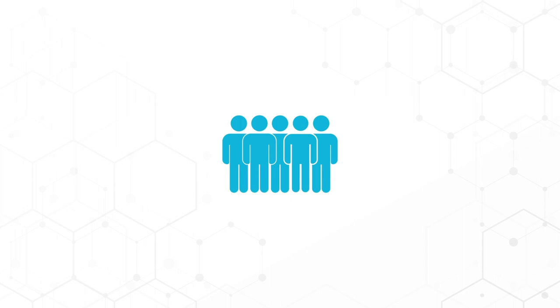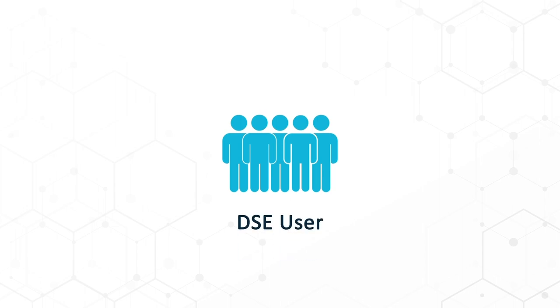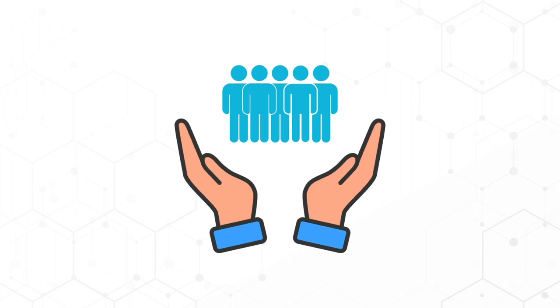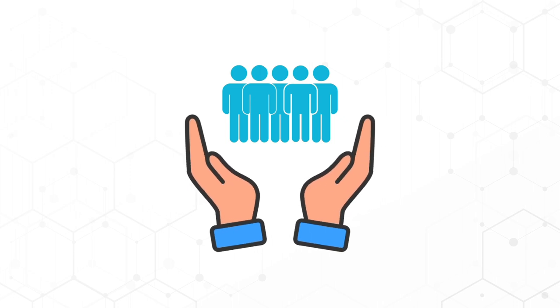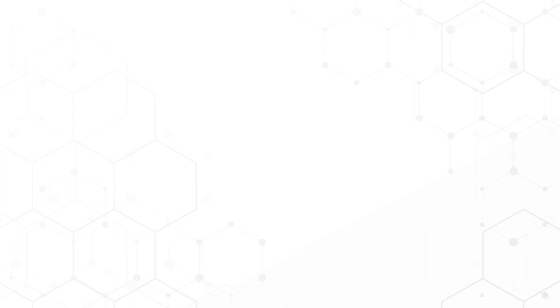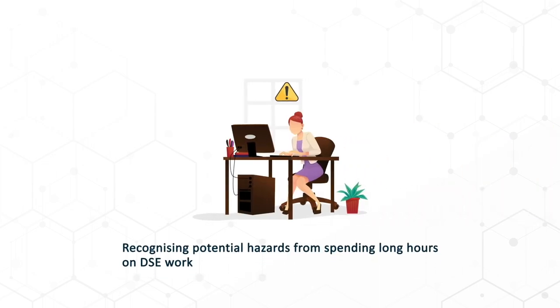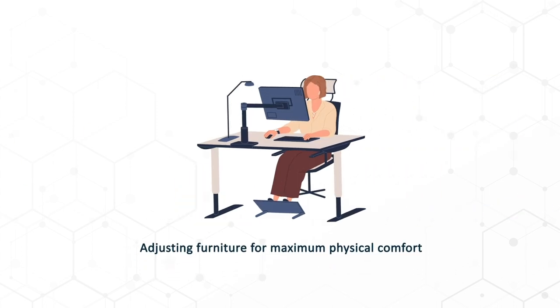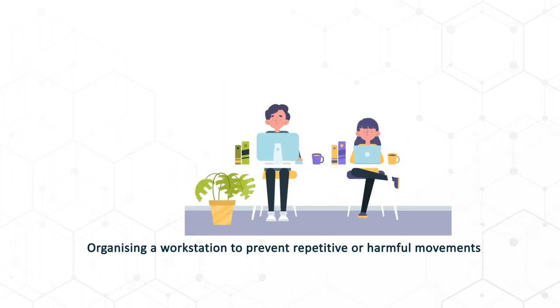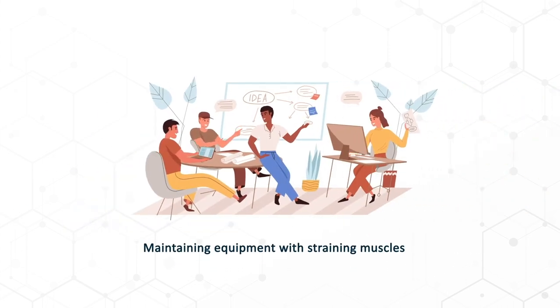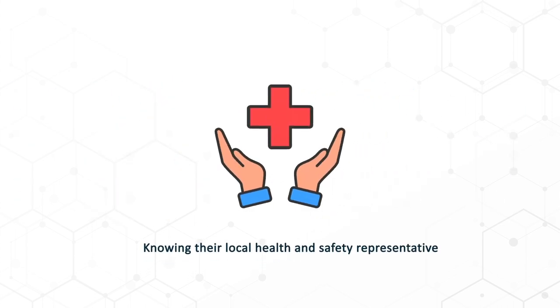If a team member has been identified as a prolific DSE user, they must be made aware of health risks and safe practices. Ideally, this should be given to them in the form of training which emphasises such factors as: recognising potential hazards from spending long hours on DSE work, adjusting furniture for maximum physical comfort, organising a workstation to prevent repetitive or harmful movements, maintaining equipment with straining muscles, and knowing their local health and safety representative.